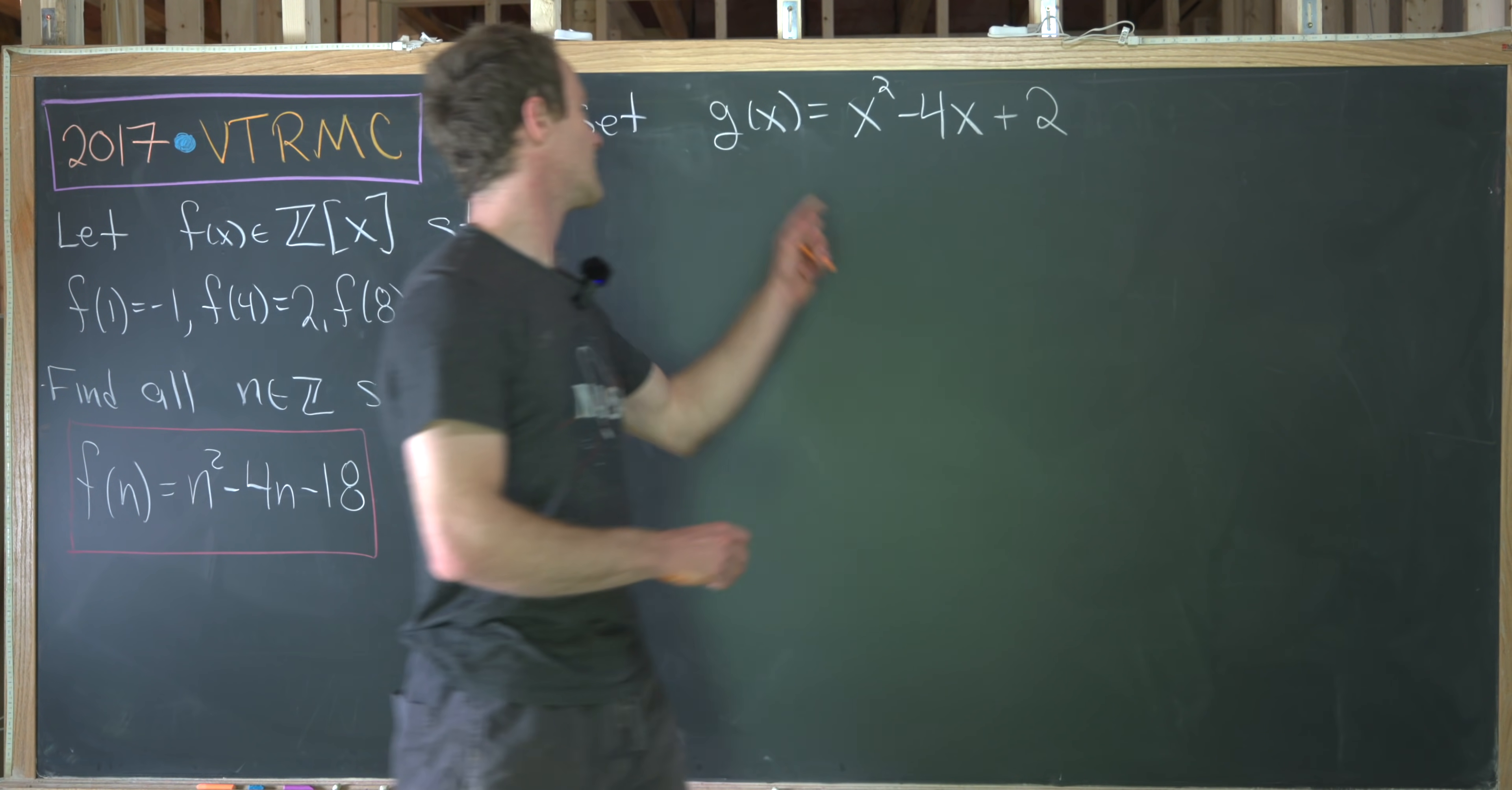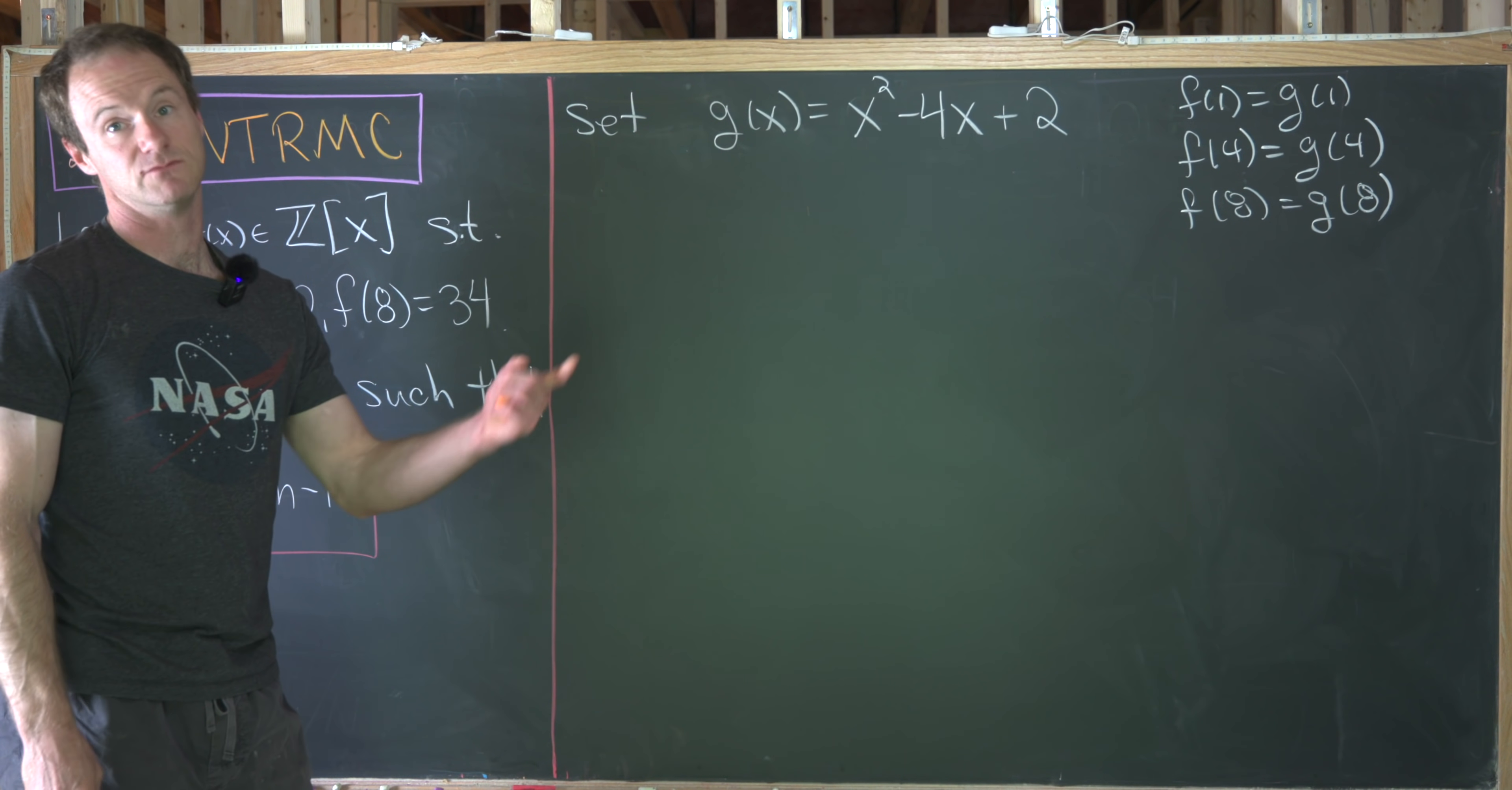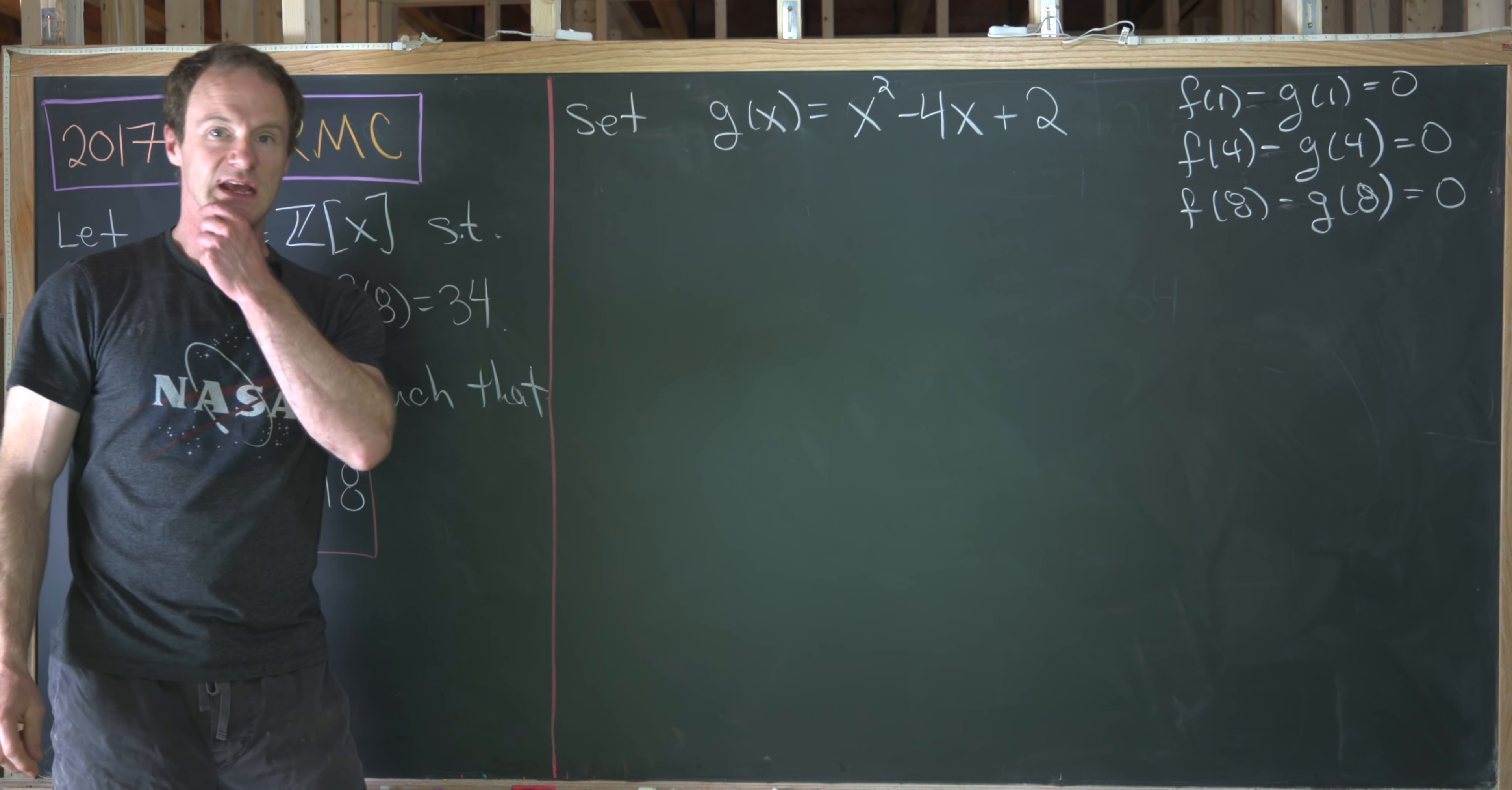Another thing to recall is that we constructed this so that f of 1 was equal to g of 1, f of 4 was equal to g of 4, and then finally f of 8 was equal to g of 8. But now we can subtract g of 1, g of 4, and g of 8 from both sides of those equations and that will give us f of 1 minus g of 1 equals 0, f of 4 minus g of 4 equals 0, and f of 8 minus g of 8 is also equal to 0.